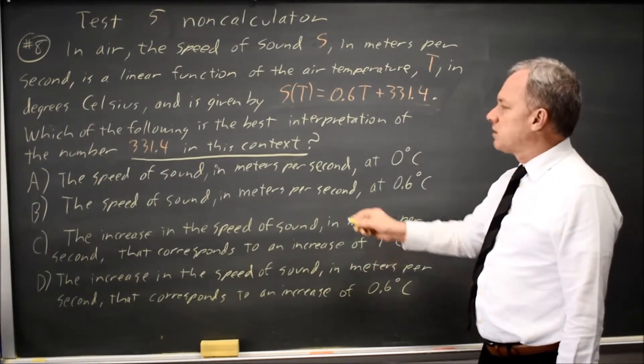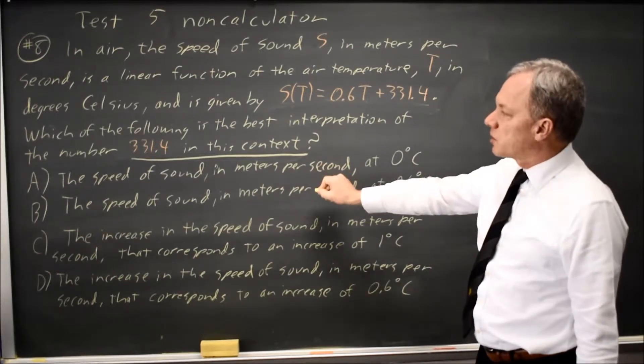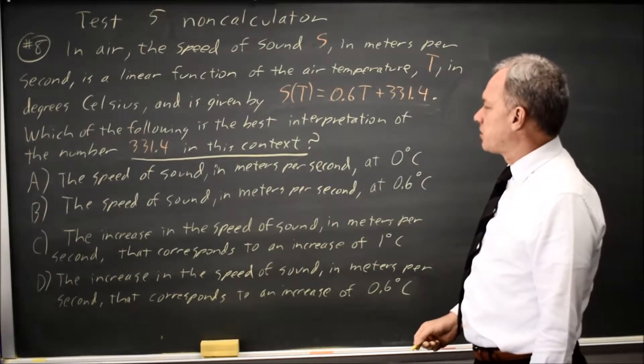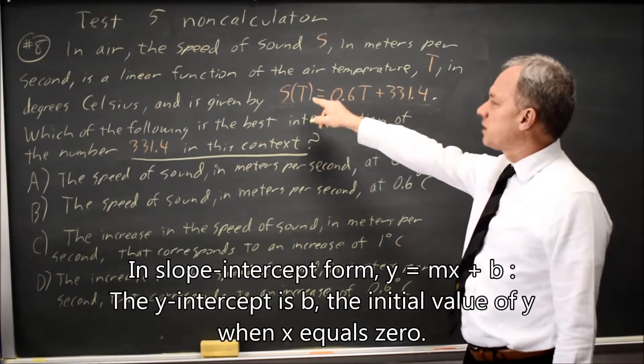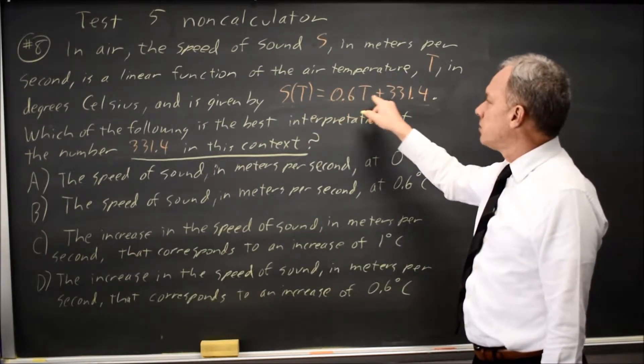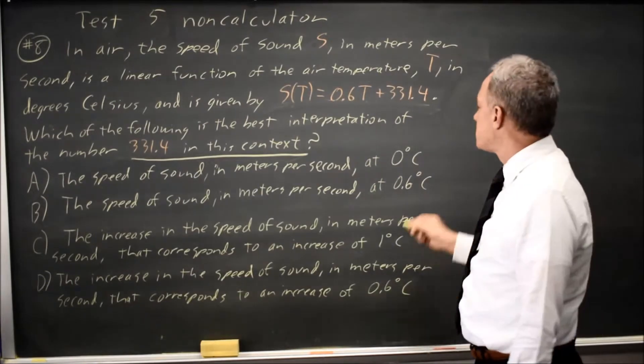Of our choices, choice A says 331.4 is the speed of sound in meters per second at 0 degrees C. If I put in T equals 0, I get S of T equals 0 plus 331.4, so that sounds right.